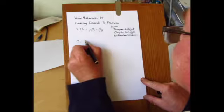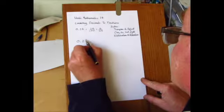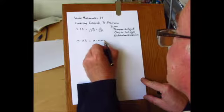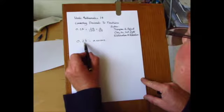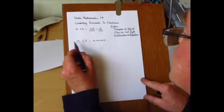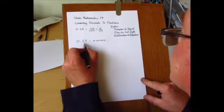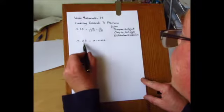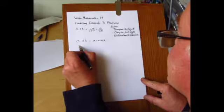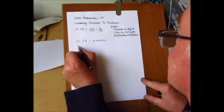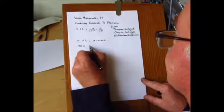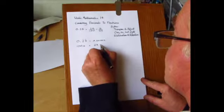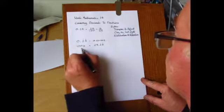I'll start with the case of 0.23 recurring—that's equal to 0.232323 etc. You count up the number of digits, it's 2 in this case, and then multiply this fraction by 100 with two zeros. So we'll say that the fraction we're looking for is X, so 100 times X is equal to 23.23 recurring.